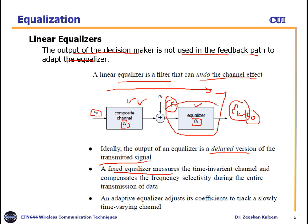A fixed equalizer measures a time-invariant channel and compensates for frequency selectivity during the entire data transmission — the channel does not vary. An adaptive equalizer, by contrast, adjusts its coefficients to track a slowly time-varying channel. The key difference: a fixed equalizer handles time-invariant channels, while an adaptive equalizer continuously updates to handle time-varying channels.